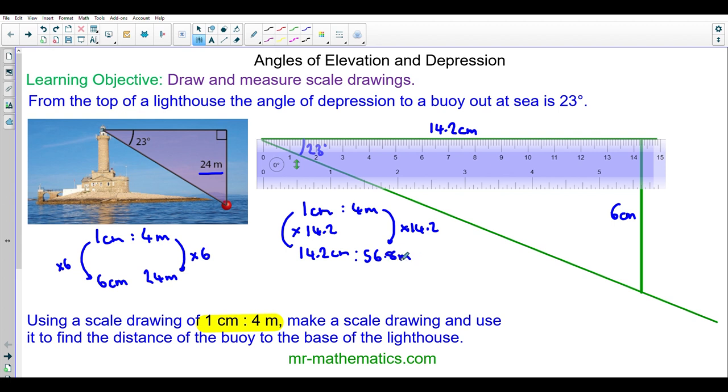So in real life, the buoy is 56.8 meters from the lighthouse.